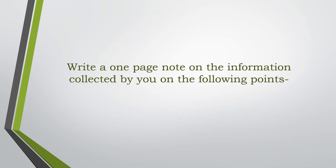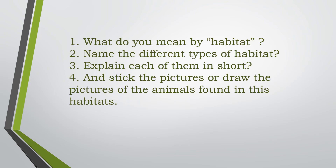Now, what you all exactly have to do for this activity? You have to write a one-page note on the information collected by you on the following points. Number 1, you have to write about the habitat. Number 2, you have to write about the different types of habitat. Number 3, you have to explain each of them in short. Number 4, you have to take pictures or draw pictures of the animals found in these habitats.